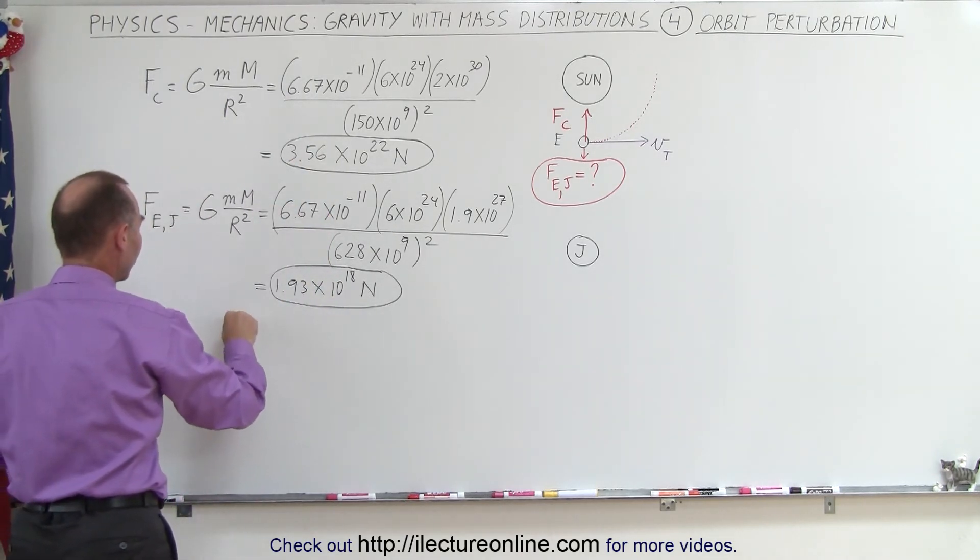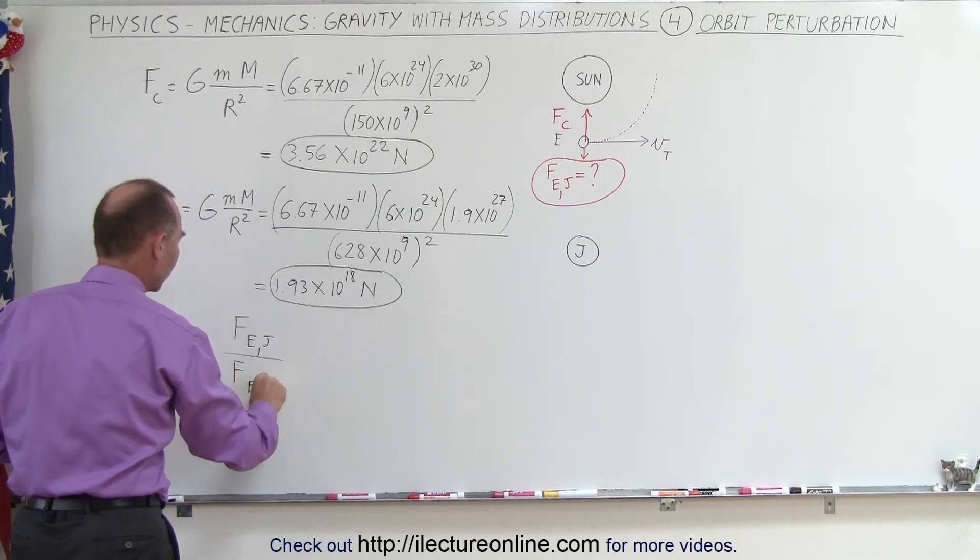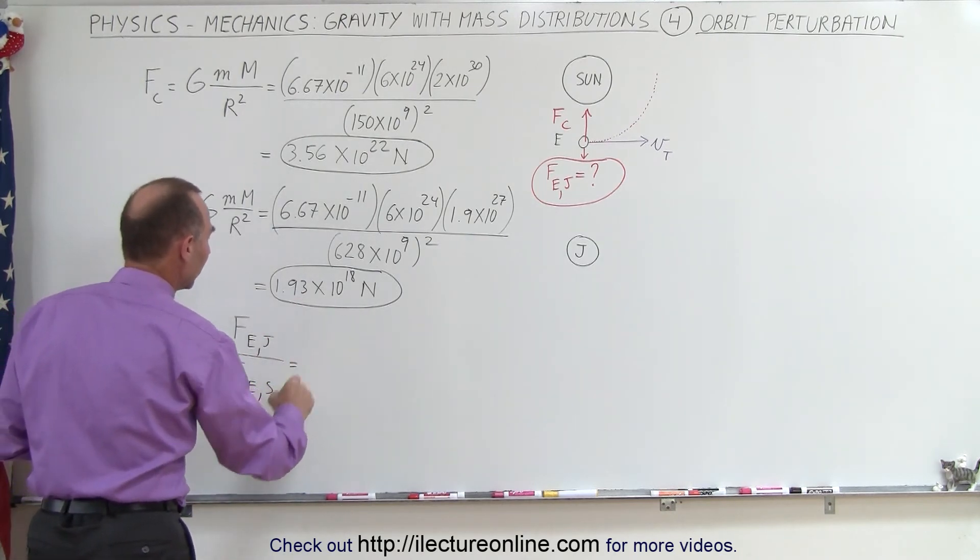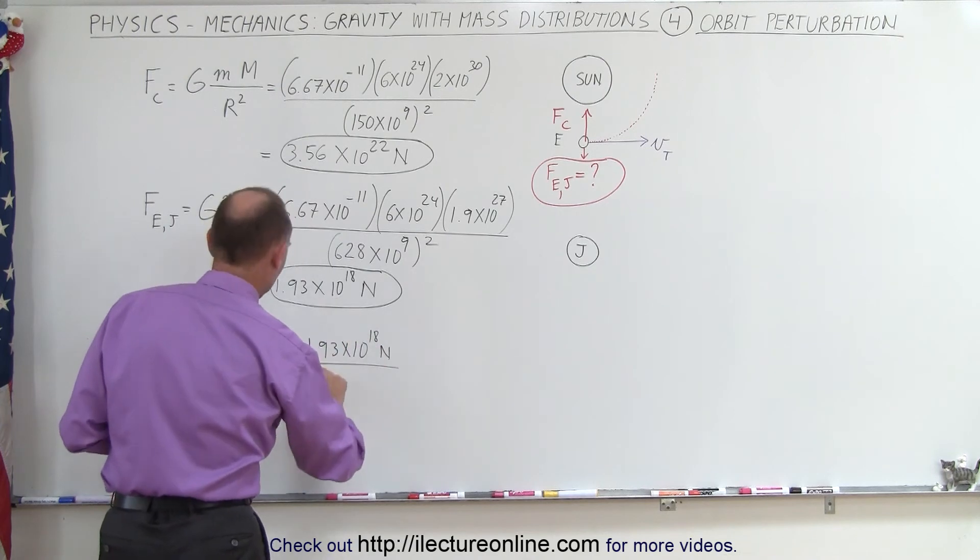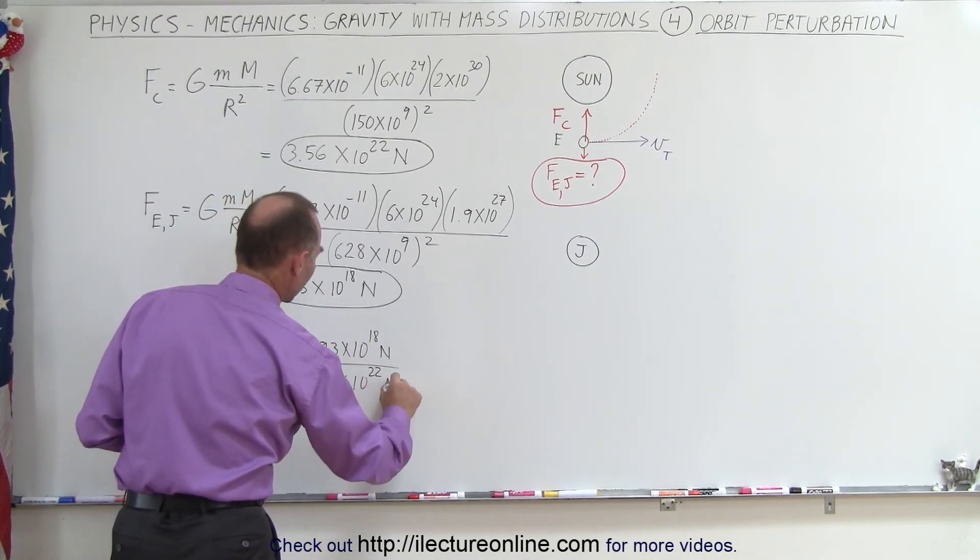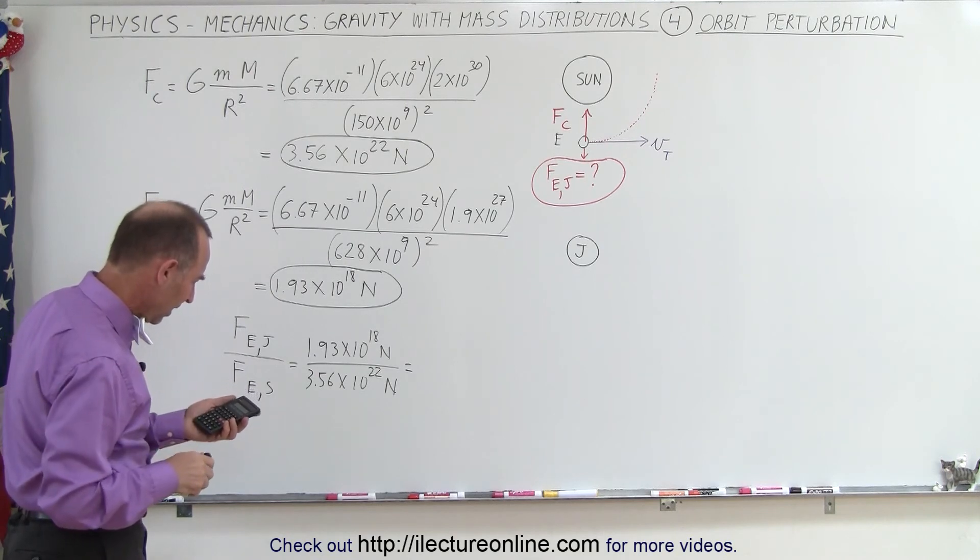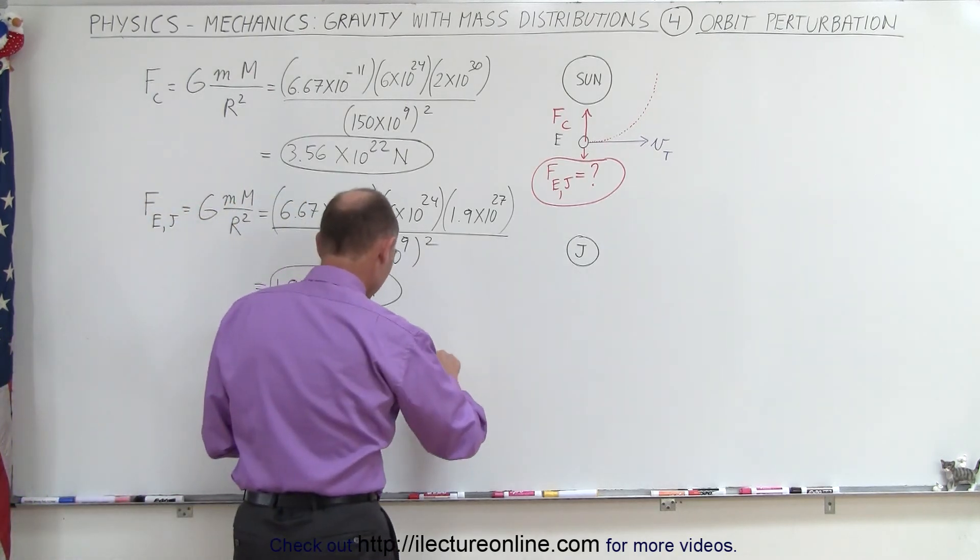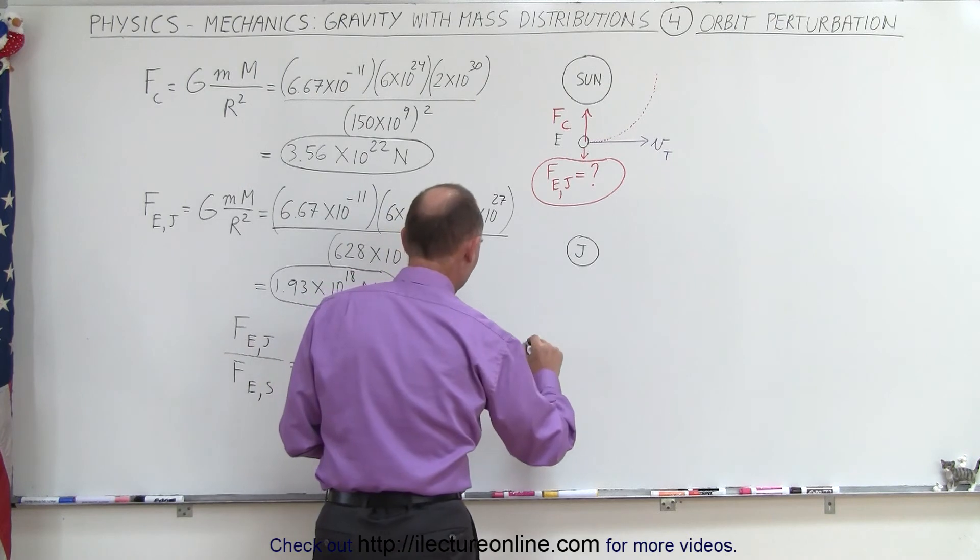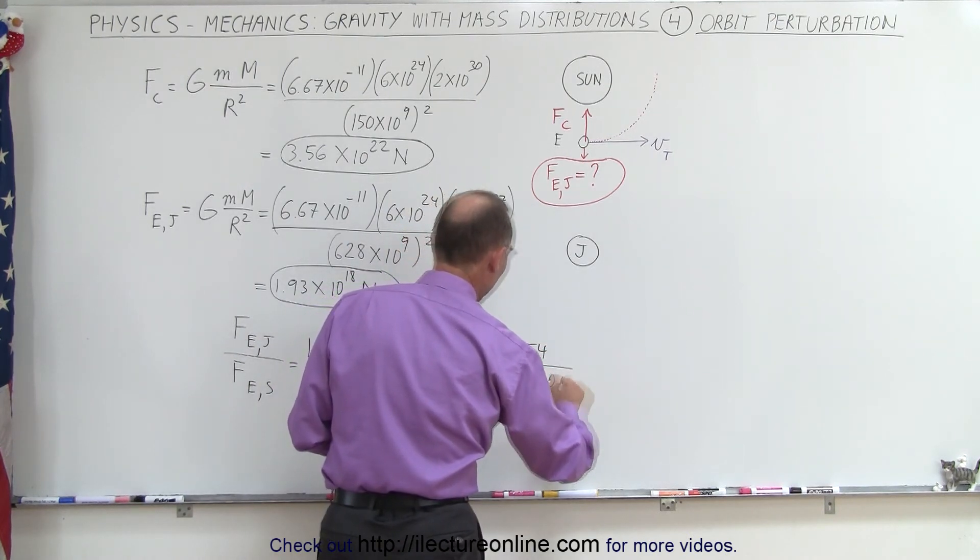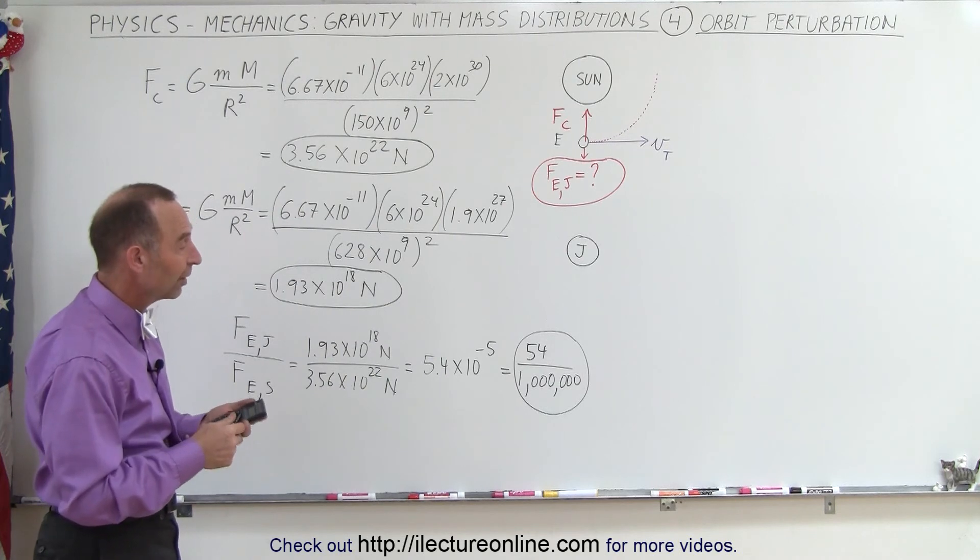But now let's go ahead and divide this by this and see what the ratio between the two is. So we have the force between the Earth and Jupiter divided by the force between the Earth and the Sun, which is the centripetal force keeping the Earth in its orbit. So the ratio is 1.93 times 10 to the 18th divided by 3.56 times 10 to the 22nd. So divide by 3.56 e to the 22nd, and that's 5.4 times 10 to the minus 5, which is basically 54 one millionths. So that is the ratio between the force between Earth and Jupiter, and the force between the Sun and the Earth.